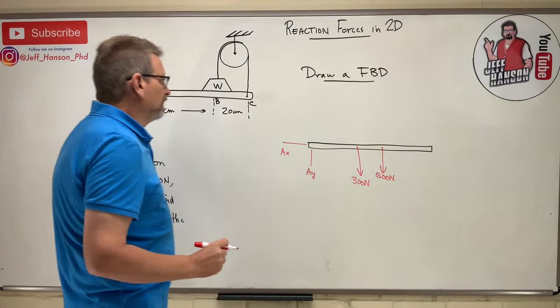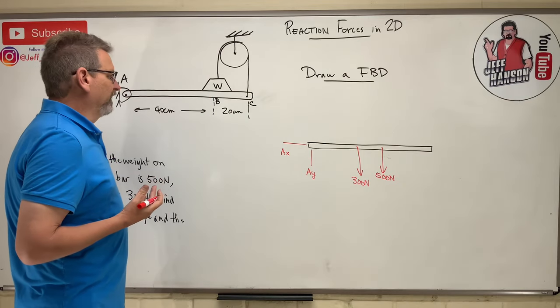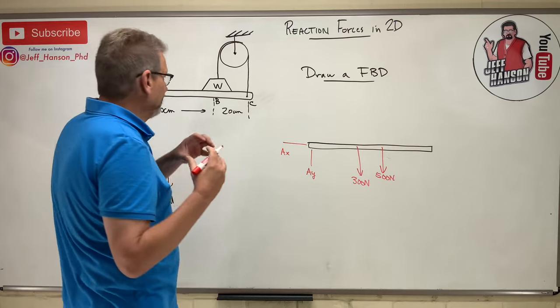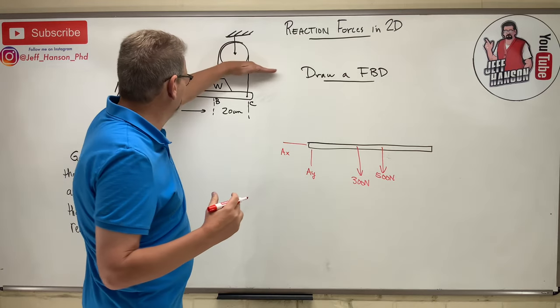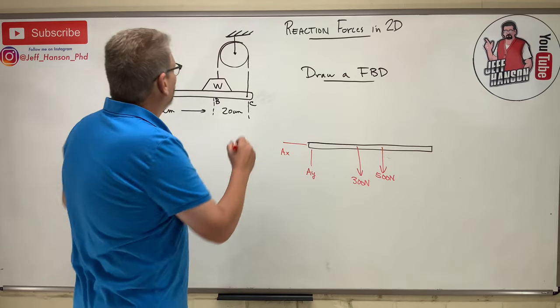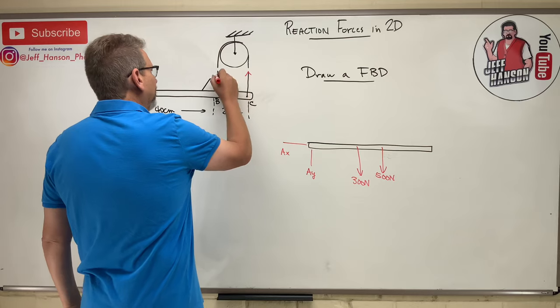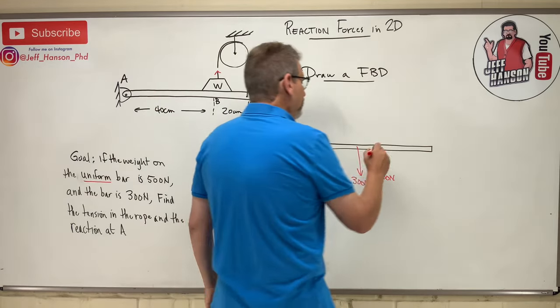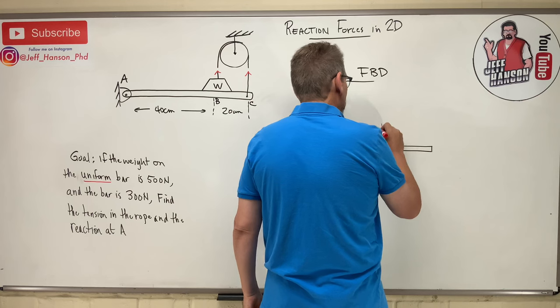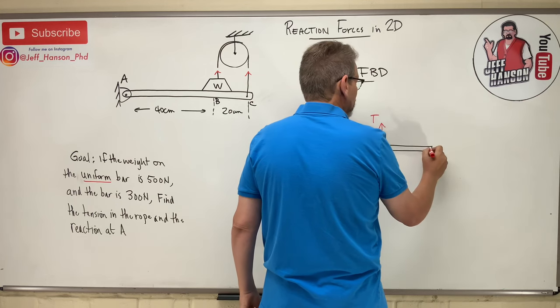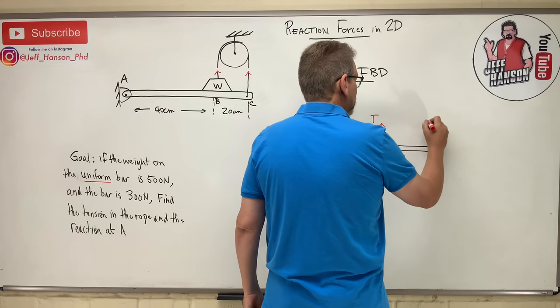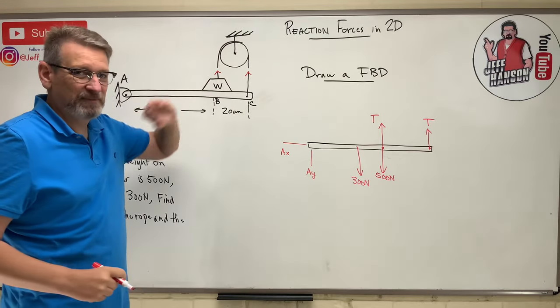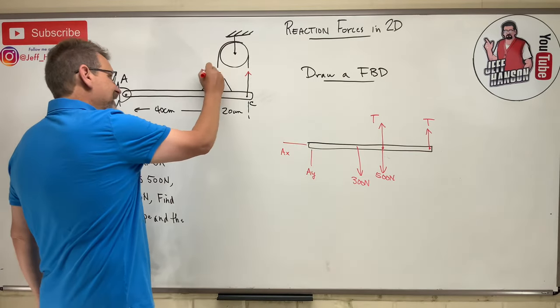There it is - 300 Newtons. And then I'm not sure what's going on over there. Well, to free this thing up from the world, to free body it, we're going to free it up from the world. I'm going to cut through these cables, right? So what do I have? I have a cable pulling up there and I got a cable pulling up there. So what do I have over here? I have let's call it T for tension, and then over here I have T for tension. Remember, rope going over a pulley, it's the same tension on both sides.